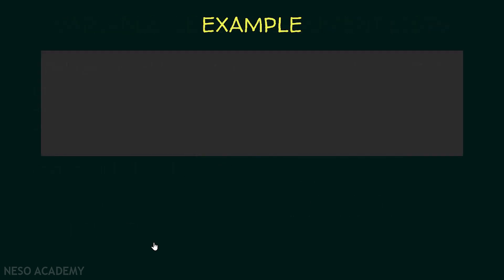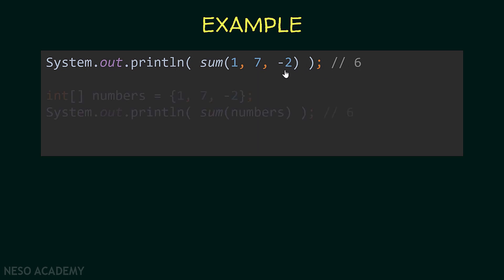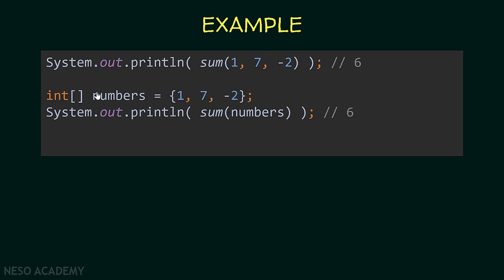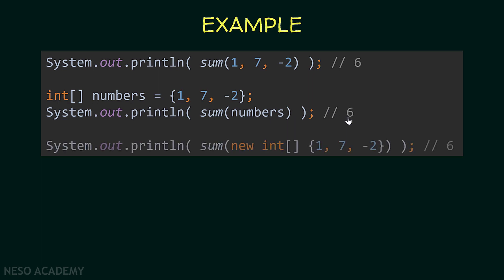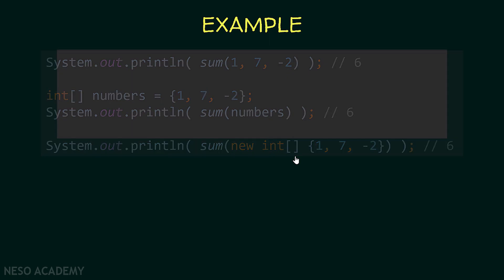Let's see more examples. I'm printing the sum of three arguments and we will see six printed. Now I'm creating an array of integers called numbers with the values 1, 7, and minus 2, and printing the sum of this array. As you can see, I'm passing an array as an argument for a variable length argument list — we will also see six printed. We can also pass an anonymous array with the same values, and six will be printed as well. So we can pass a variable number of arguments or an array.